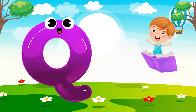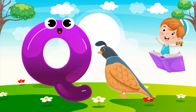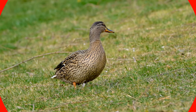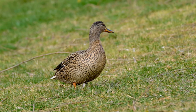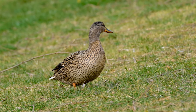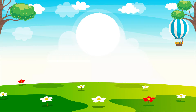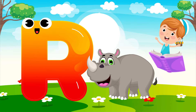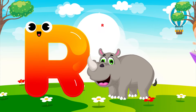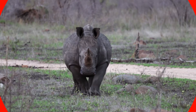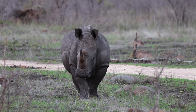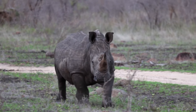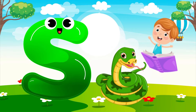Q is for Quail. k-k-k-quail, k-k-k-k-k. Q, Quail. R is for Rhino. R, R, Rhino. R, Rh, Rhino. R, Rhino.